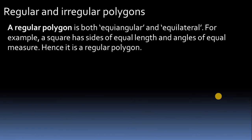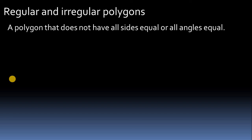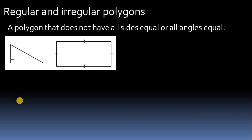Regular and irregular polygons: a regular polygon is equiangular and equilateral — all sides are the same and all angles are the same, for example a square or equilateral triangle. An irregular polygon has either different sides or different angles. For instance, a shape with different angle measurements, or a rectangle where side measurements are different even if some angles are the same, is an irregular polygon.